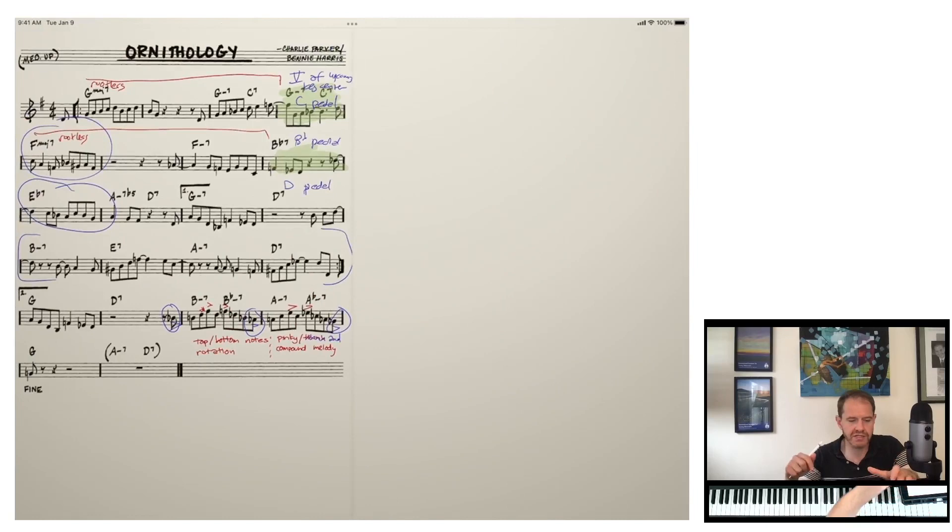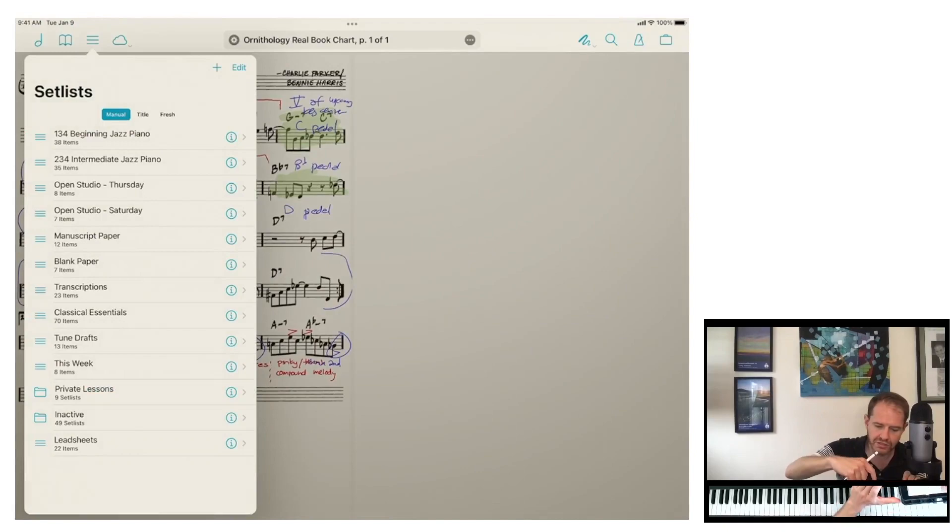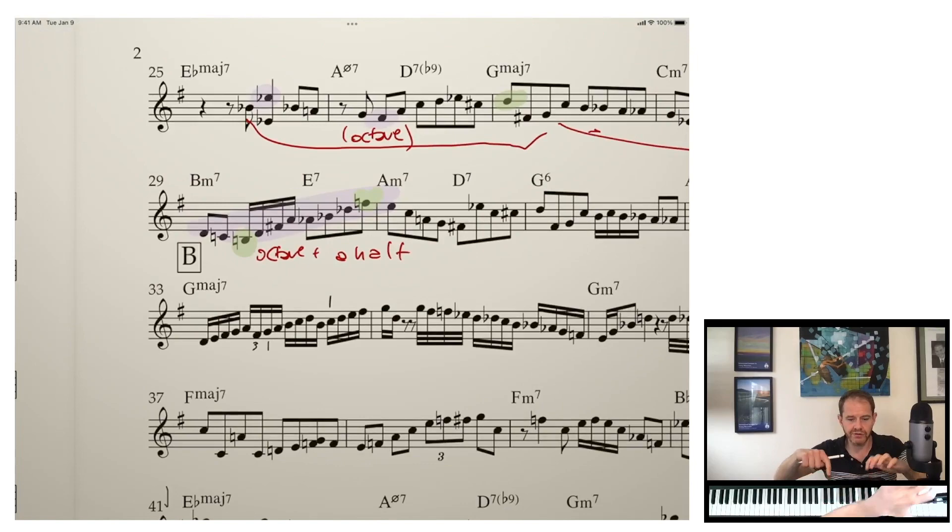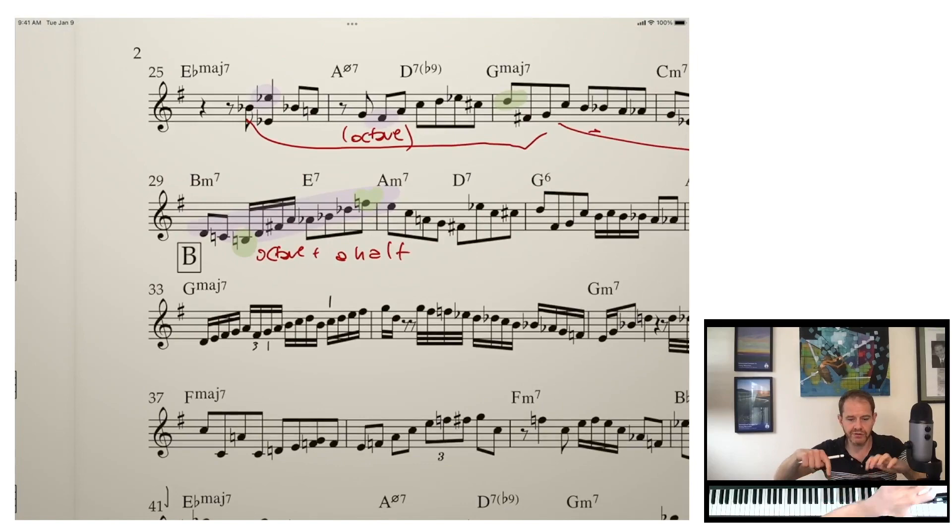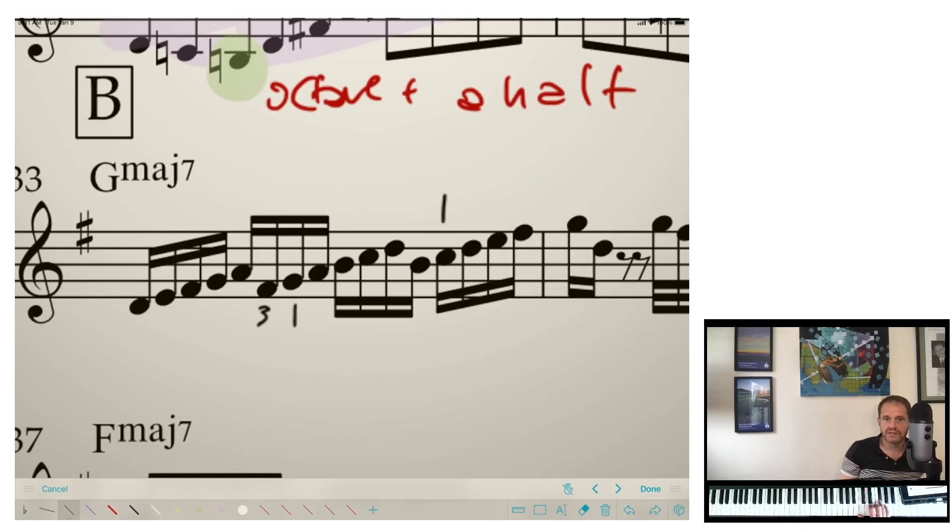I'm going to show you one more example here. I just need to pull it up. I'm going to find my transcriptions. And I think I might have shown this on my channel before. So this is a Bud Powell solo. If you look at measure B, I just love this measure. It says so much about bebop in this one measure. This is just a G major scale. We're sticking with ornithology today.